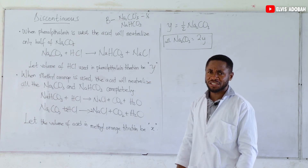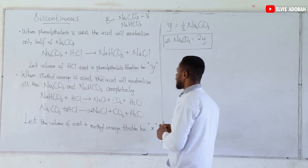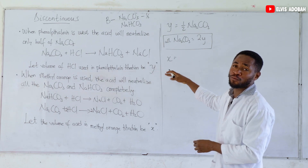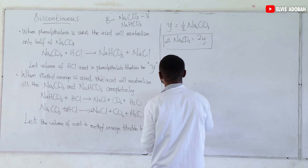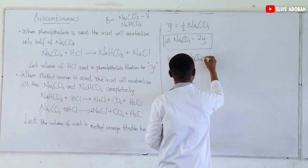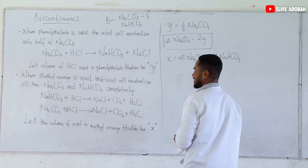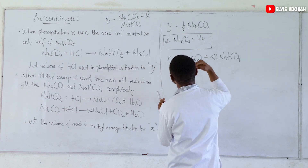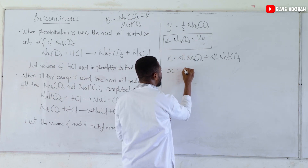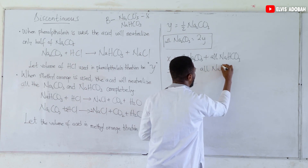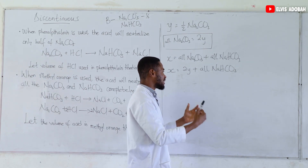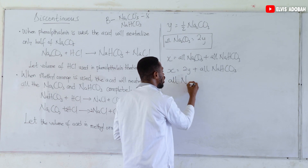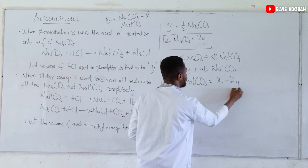Now let's talk about our second titration involving methyl orange. The volume of acid here is represented by X. X occurred in the presence of methyl orange, and what did we do? We converted all sodium carbonate — already represented as 2Y — then all sodium bicarbonate. So X equals 2Y plus all sodium bicarbonate. Making sodium bicarbonate the subject: all sodium bicarbonate equals X minus 2Y.